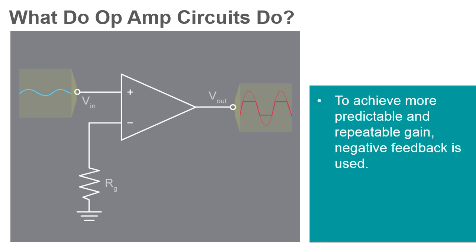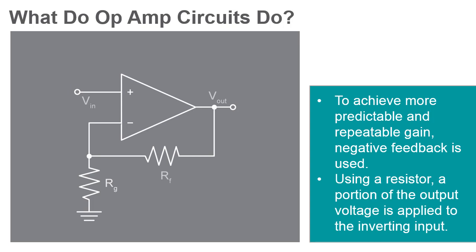To achieve a more reliable and predictable magnitude of gain from an op amp, negative feedback is used. This negative feedback is achieved by applying a portion of the output voltage to the inverting input.